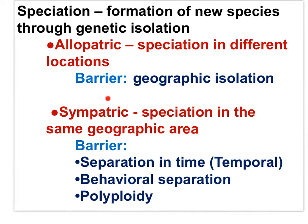Now we move on to look at sympatric speciation, which is speciation in the same geographic area. Sympatric speciation is more difficult to document than allopatric speciation because the barriers to gene flow are less obvious. The barriers that result in sympatric speciation are: separation of fertility in time, behavioral separation where the two populations no longer recognize the other's looks or emotions, and polyploidy. The first we will look at is the temporal barrier — separation due to differences in the timing of fertility.